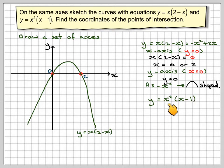And now I've got y = x²(x-1). This is a cubic. At the x-axis, y = 0, so that means x²(x-1) = 0, which means that x is going to be 0, or x = 1. Now, because it's x², x = 0 is a repeated root.